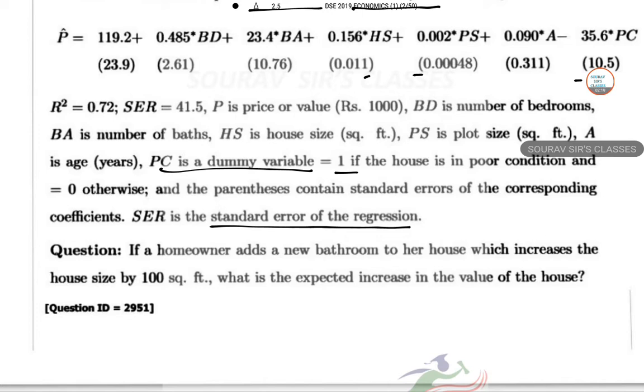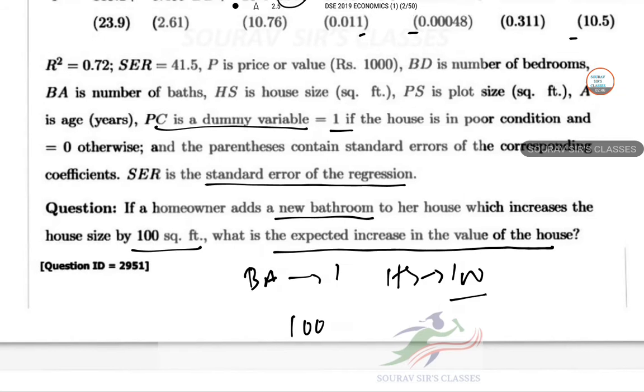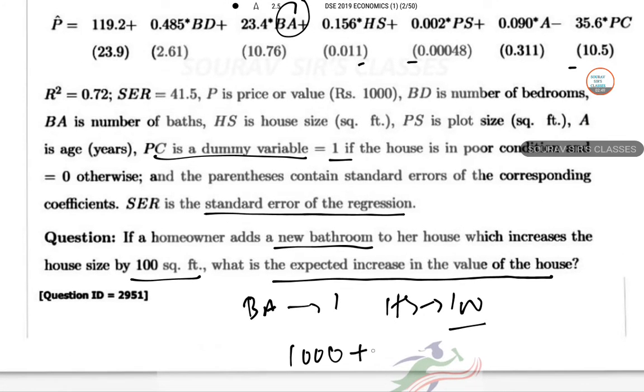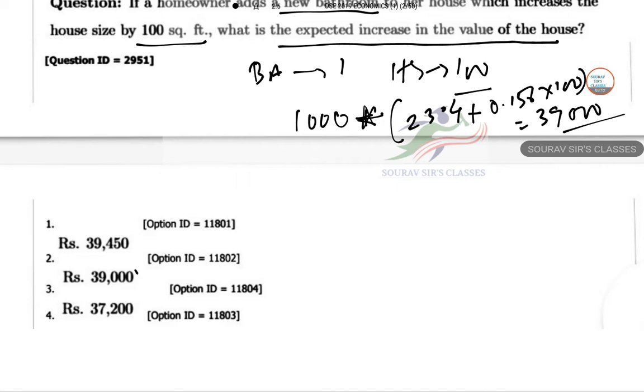If a homeowner adds a new bathroom to her house which increases the house size by 100 square feet, what is the expected increase in the value of the house? In this case, the BA value will increase by 1, while HS increases by 100. Using the estimated coefficient, the expected change will be 1000 times 23.4 (this is the coefficient here) and the other coefficient is 0.156 times 100, so this is 39,000. So this option is correct.